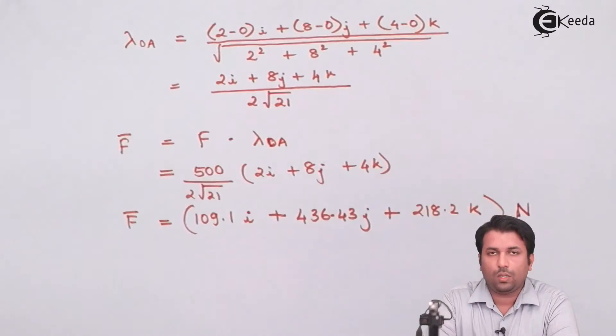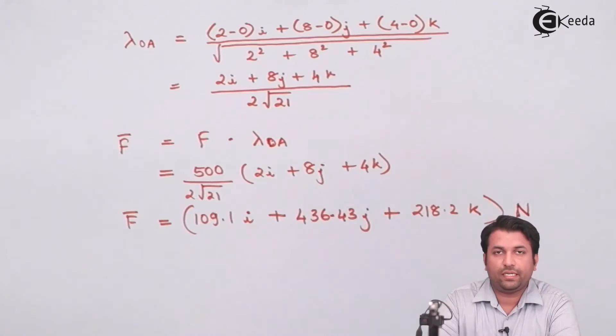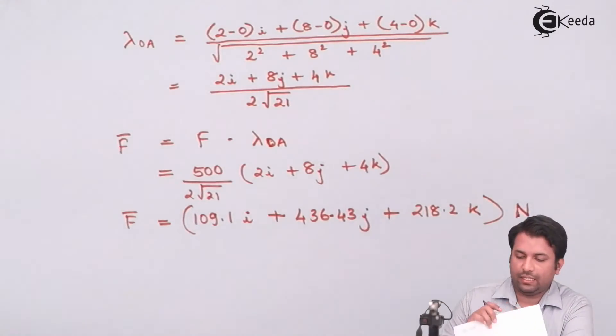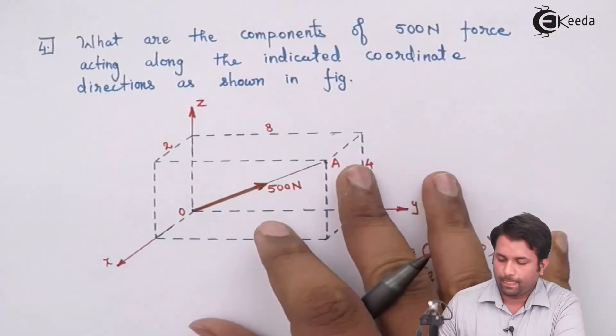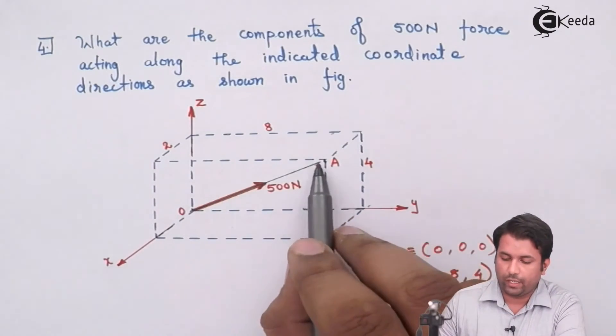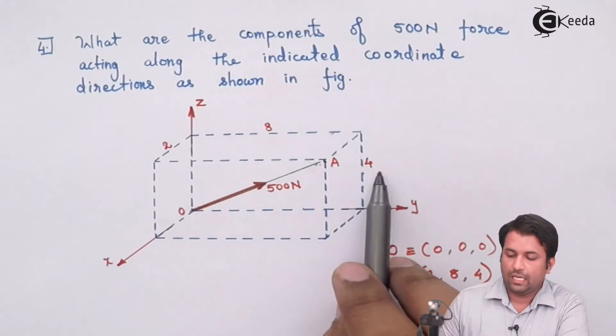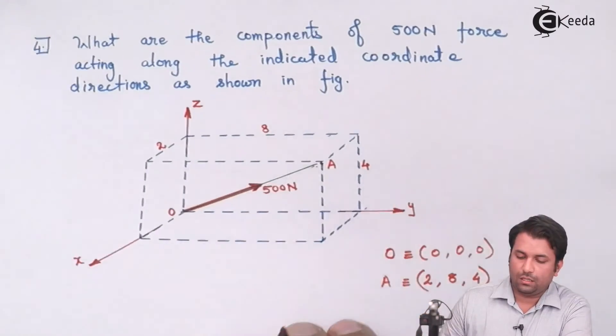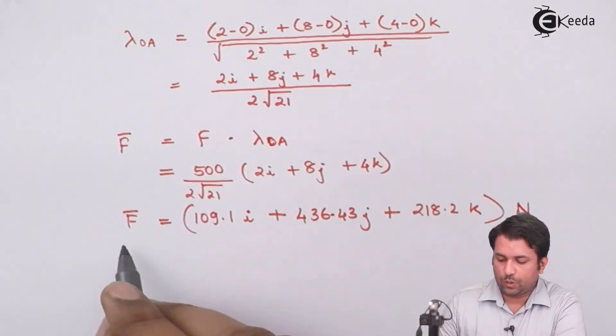So this is how I have got the force vector for the given force system, that is, if the force is originating from this point and passing through this point with these coordinates, then the force vector is this value.